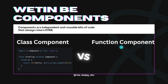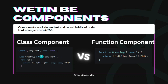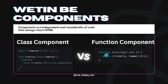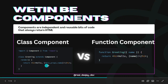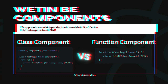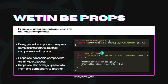With functional components, you write the same logic but as a single function, and you just pass in your props. There's no need to write 'this.props.name' — you can just use destructuring to pull out what you need from the props. That's what props are for.